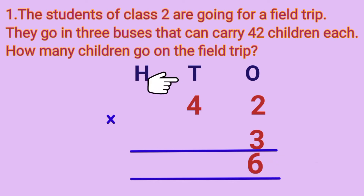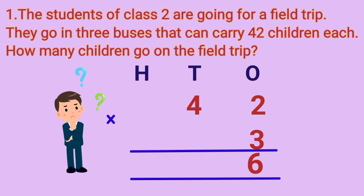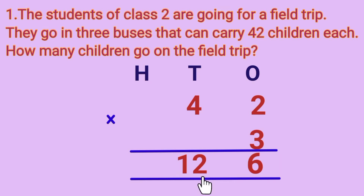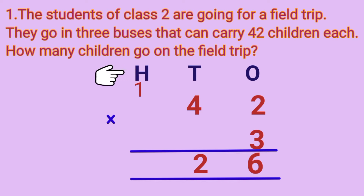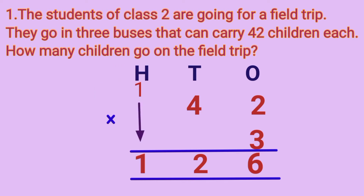Next, multiply the tens place. 4 multiplied by 3 is equal to — what is the answer? 4 threes are 12. Since 12 is a 2-digit number, we put 2 in the tens place and carry over 1 to the hundreds place. In the hundreds place there is only one number, so we put 1 under the hundreds place.